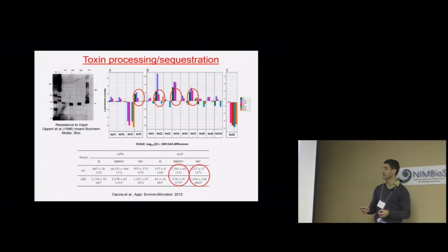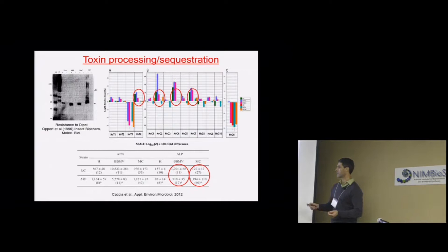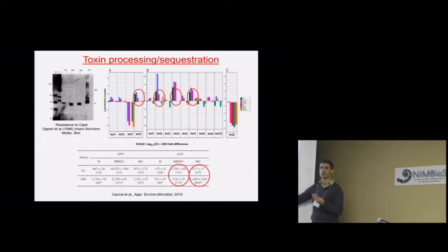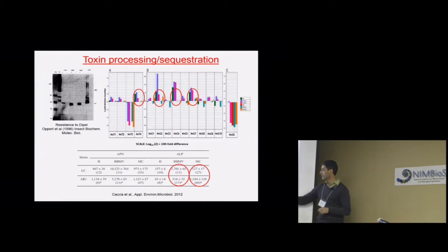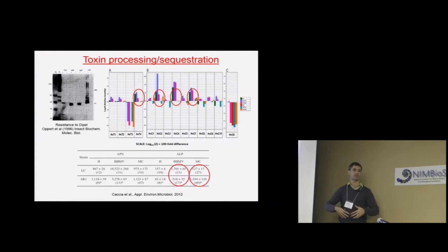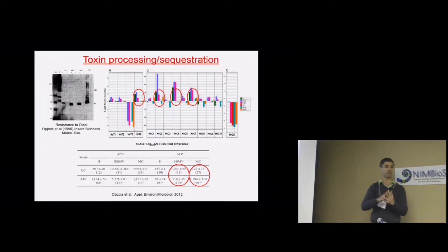Another related mechanism is sequestration of the toxin, which can also operate as a resistance mechanism to Bt crops. In a resistant strain of Helicoverpa, we found that alkaline phosphatase — one of the GPI anchor proteins — is about threefold reduced on the surface of gut cells in resistant insects compared to susceptible. But even more impressively, resistant insects have a tenfold increase of this protein in the gut lumen, essentially secreting the receptor into the lumen to sequester the toxin away from the brush border membrane.